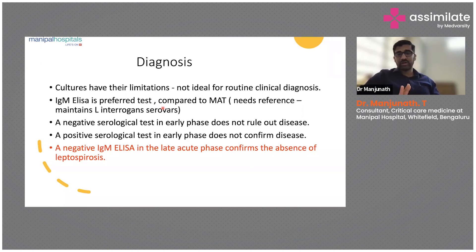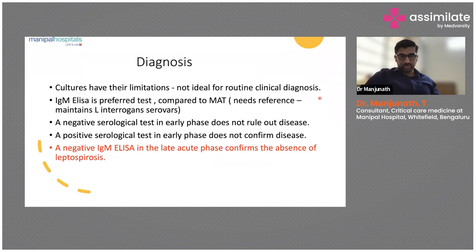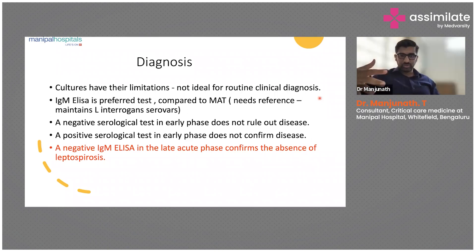A positive serological test in the early phase does not confirm the disease either, because most antibodies become positive only in the late phase — the immune phase is where IgG and IgM antibodies become positive. A negative IgM result in the late acute phase confirms absence of leptospirosis. If a history says only three days of fever, it's very difficult to decide when to send the sample — diagnosis is a dilemma for all of us.